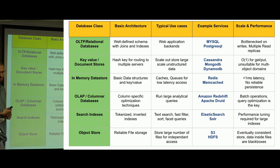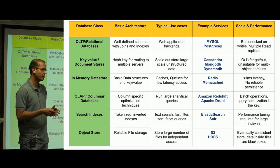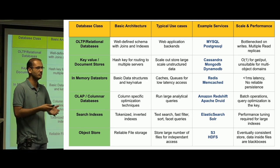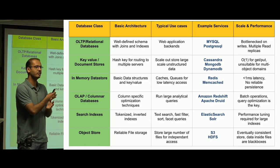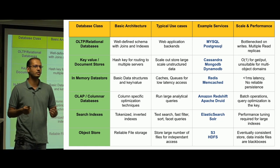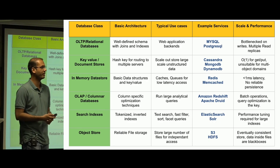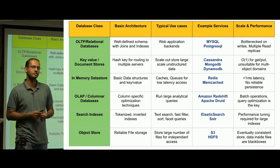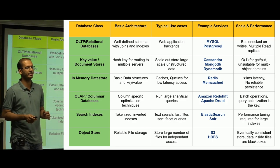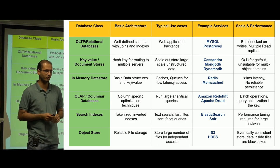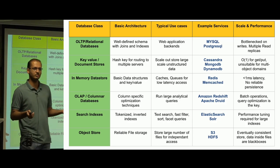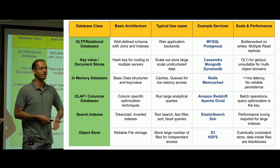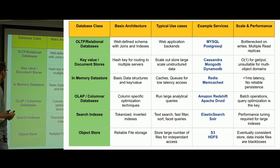Second, you have key-value or document stores — eventually consistent systems that are horizontally scalable. You cannot do joins, but you can store a large amount of one type of data spread across the system, like users in social media or tweets in Twitter. Then you have in-memory data stores like Redis or Memcache, which store the database in RAM. A single Redis call has less than 1ms latency — very low compared to what an RDBMS or Cassandra can give you.